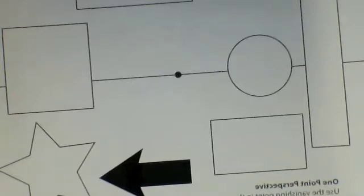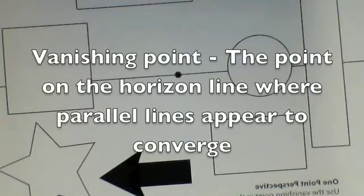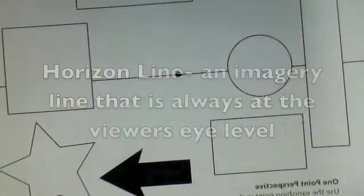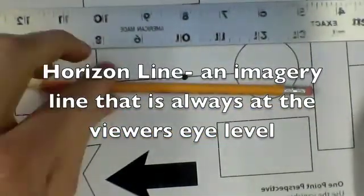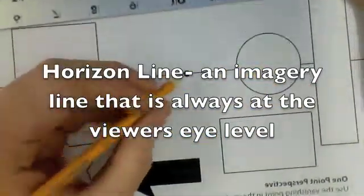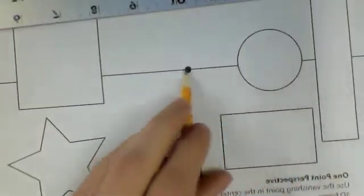Before we get started, there's a few terms that you should know. The black dot in the center of the page is the vanishing point. A lot of times people just write VP next to it. That stands for vanishing point and that's where all objects are going to end up going to. The line in the center of the page is called the horizon line. This line represents the viewer's eye level.